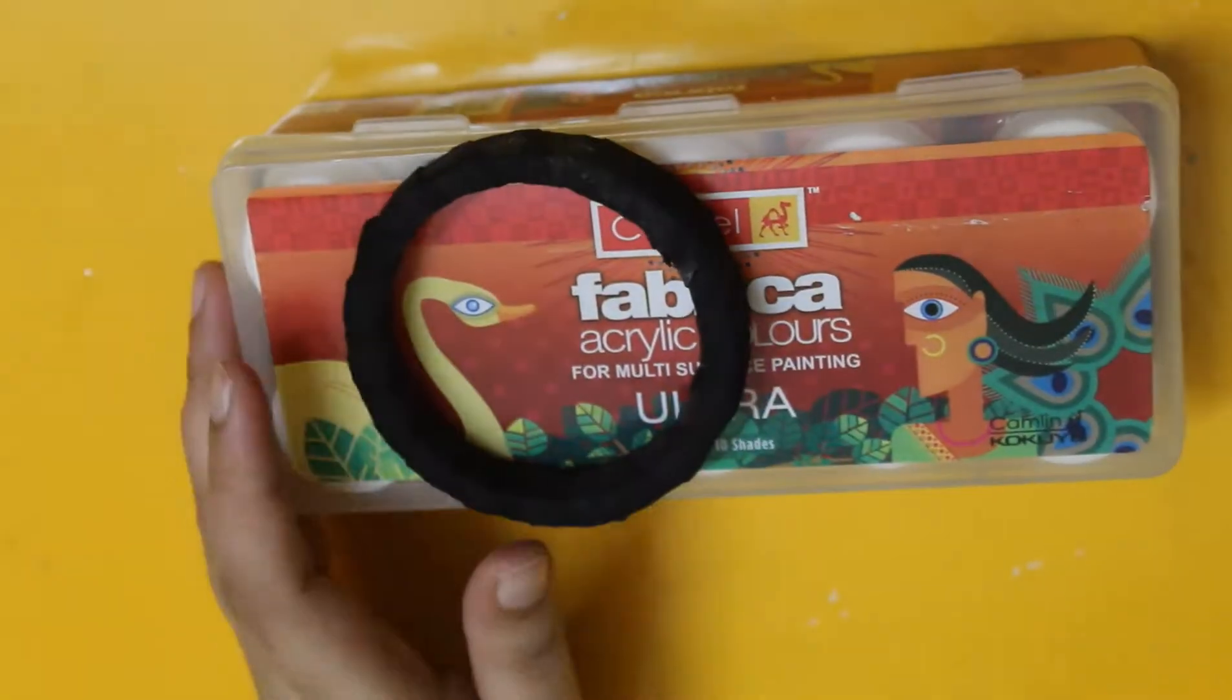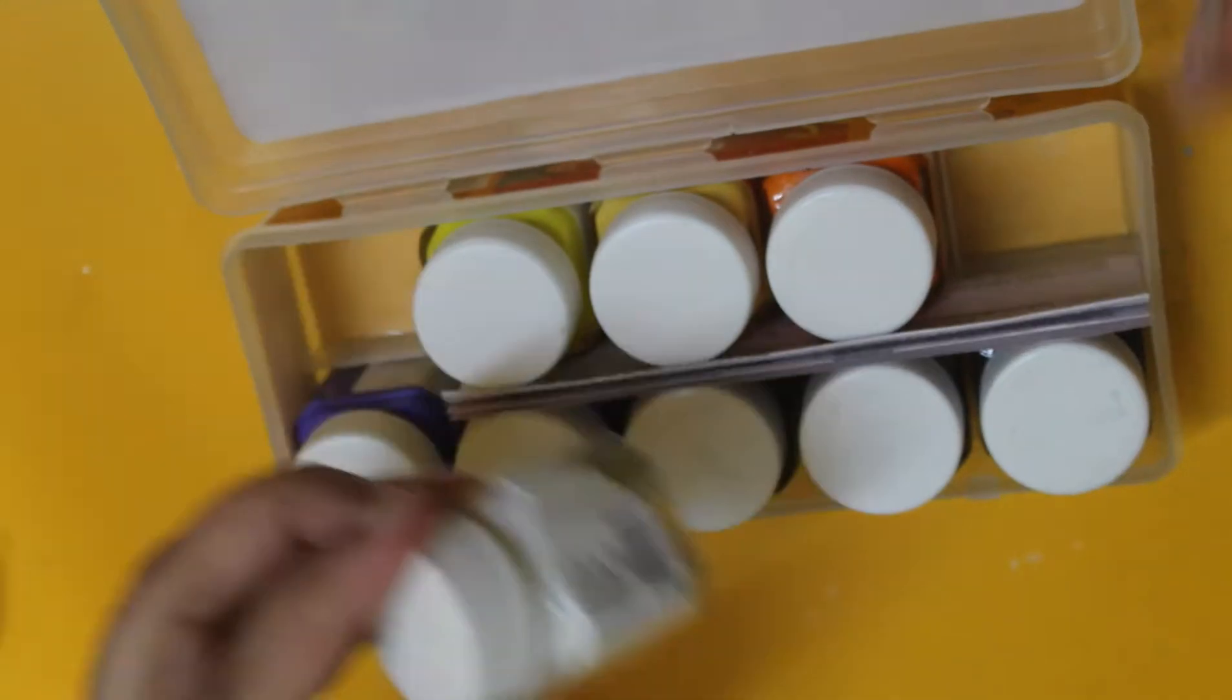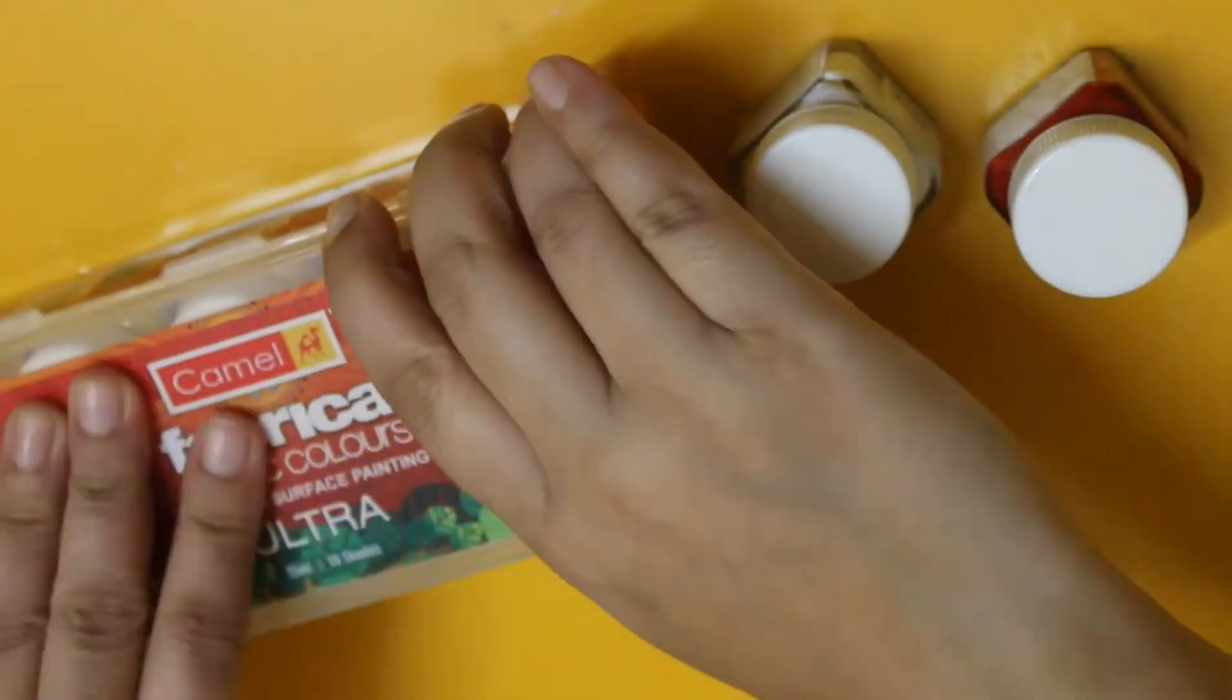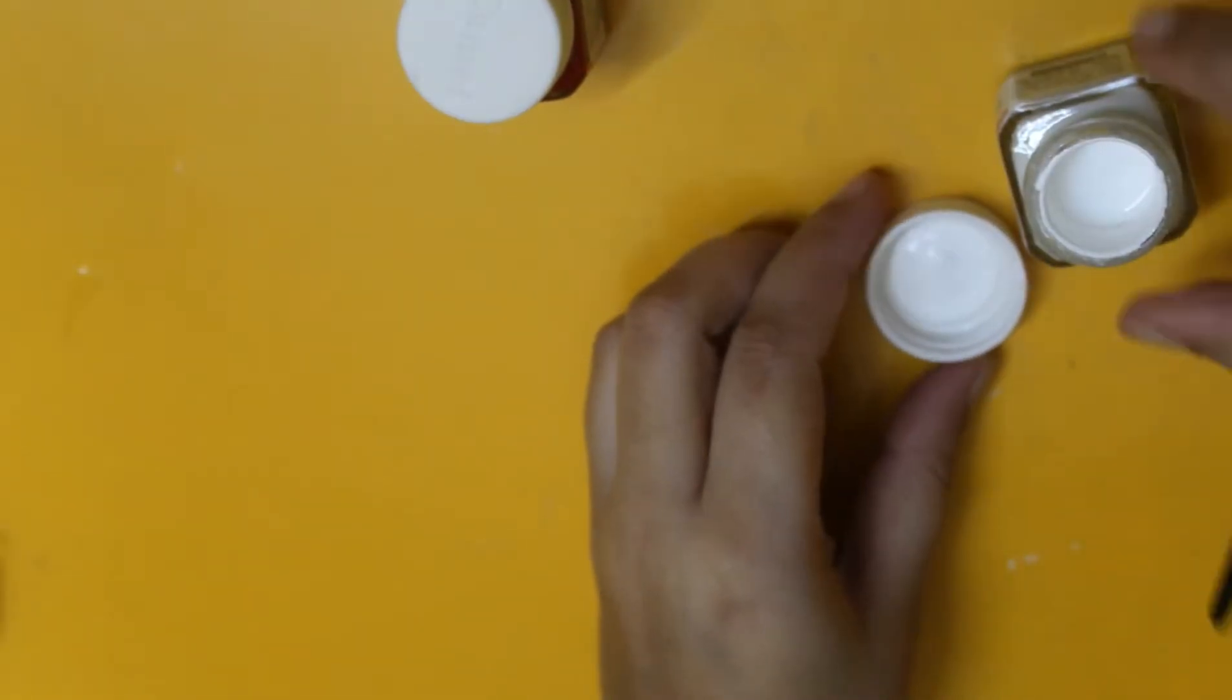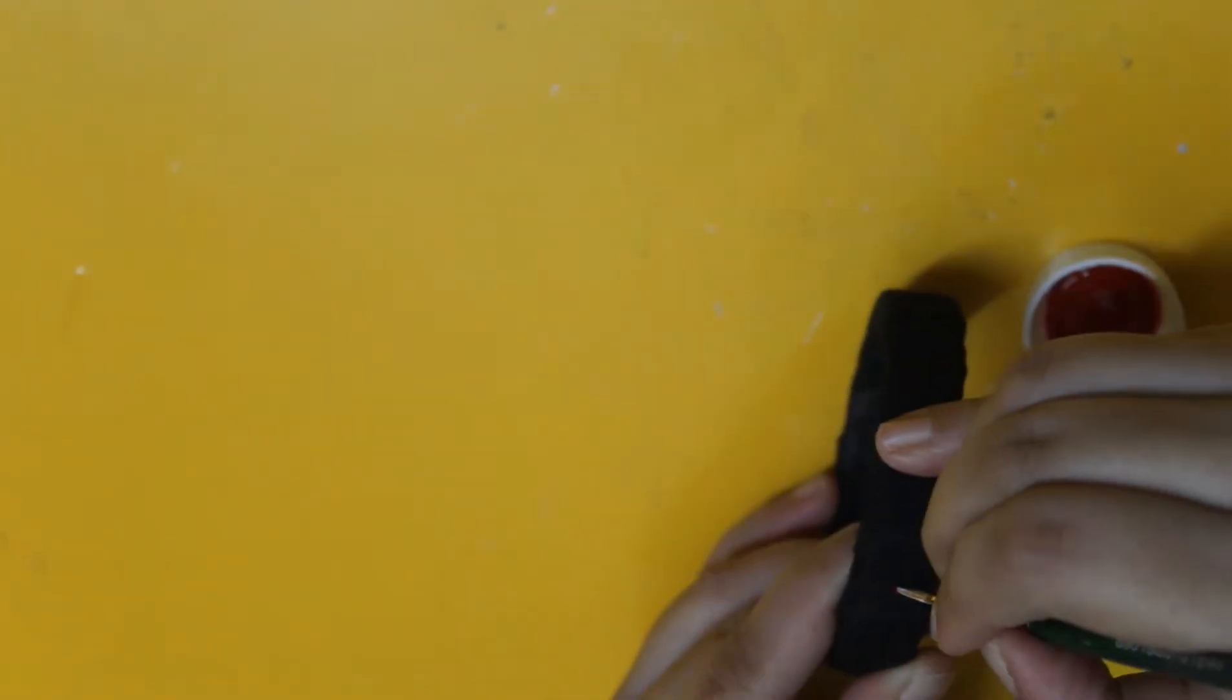Now it's time to decorate the bangles. For that I have some fabric colors with me - I am using red and white color for this black bangle. I am starting to draw a flower from one point of the bangle.